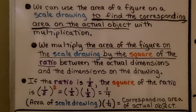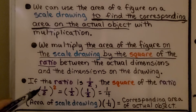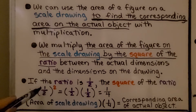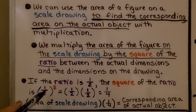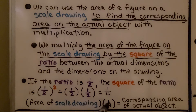We can use the area of a figure on a scale drawing to find the corresponding area on the actual object with multiplication. We multiply the area of the figure on the scale drawing by the square of the ratio between the actual dimensions and the dimensions on the drawing. Remember, we need parentheses around the fraction one-half so the exponent affects the entire fraction and not just the numerator — giving us one-half times one-half equals one-fourth. So if we have the area of our scale drawing and multiply it by one-fourth, it will equal the corresponding area of the actual object.